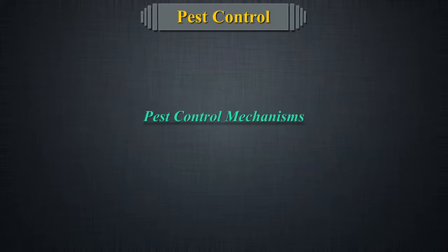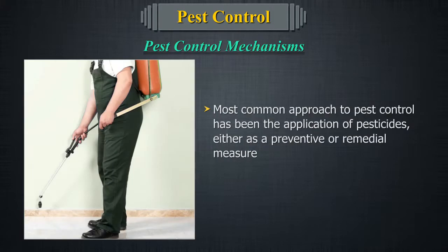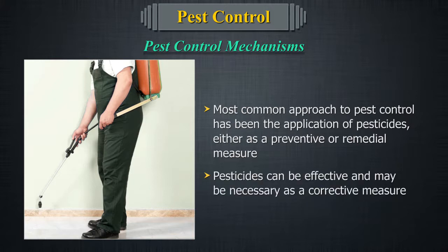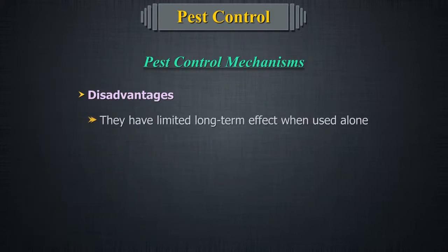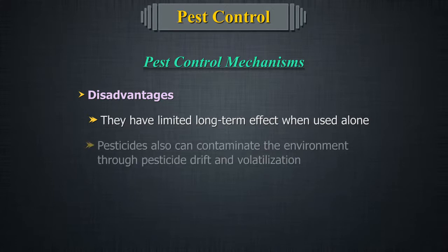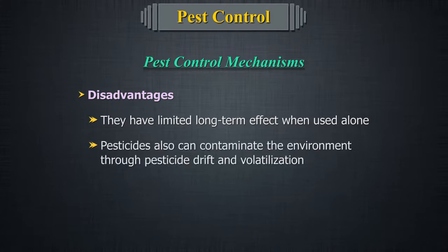Pest control mechanisms. The most common approach to pest control has been the application of pesticides, either as a preventive or remedial measure. Pesticides can be effective and may be necessary as a corrective measure, but they have limited long-term effect when used alone. Pesticides can also contaminate the environment through pesticide drift and volatilization.